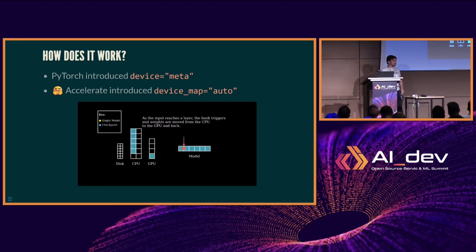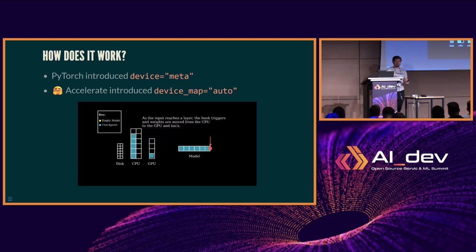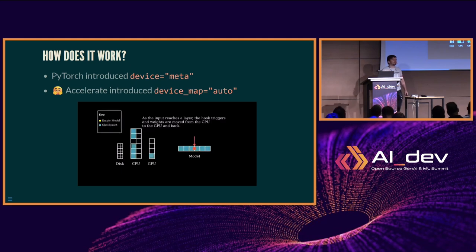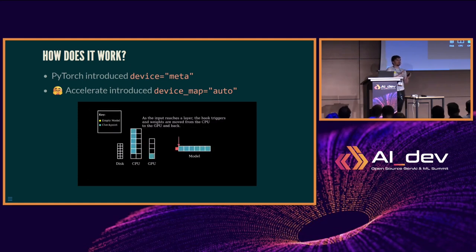How this works: PyTorch came out with the idea of the meta device. The meta device has no weights — it's simply a skeleton that takes up a tiny footprint and says we know the rough sizes of how our model is going to fit into memory. What we took with that is to introduce device_map=auto: as we take an input and shove it into the model, each layer is moved on and off of the GPU or whatever accelerator you're using.